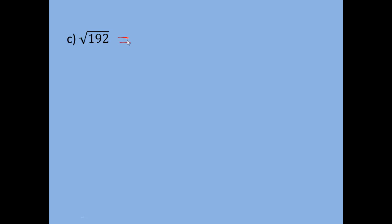Let's take a look at one more: the square root of 192. It might not be obvious what the highest perfect square factor of 192 is. Keep in mind the perfect squares: 1, 4, 9, 16, 25, 36, 49, 64, 81, 100, and so on. These are just the integers squared — 1 is 1², 4 is 2², 9 is 3², 16 is 4², 25 is 5², 36 is 6², and so on.